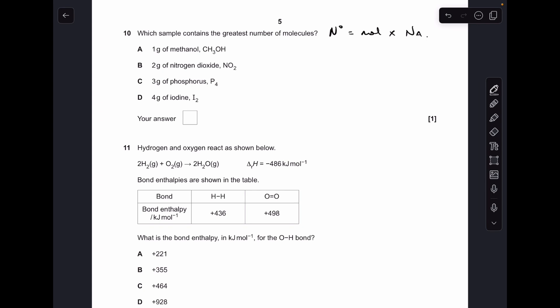Number ten: the number of particles, and in this case the particles are molecules, is equal to the moles times Avogadro's number. So all we need to do is calculate the number of moles of each of these, and obviously the biggest number will be the answer. So the biggest number of moles was for B, so that's the answer.